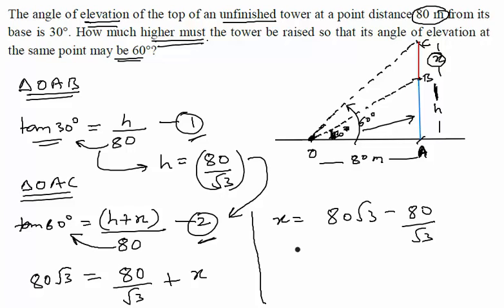Which means that my value of X is now 80 root 3 minus 80 upon root 3. This value if you simplify, this will become 80 into root 3 into root 3, which is 3 minus 1, 2 upon root 3, something like this. This is X.